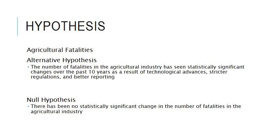The hypothesis of this study relates mainly to agricultural fatalities. The alternative hypothesis is that the number of fatalities in the agricultural industry has seen statistically significant changes over the past 10 years as a result of technological advances, stricter regulations, and better reporting. The null hypothesis is that there has been no statistically significant change in the number of fatalities in the agricultural industry over the time period of 2005 to 2014.